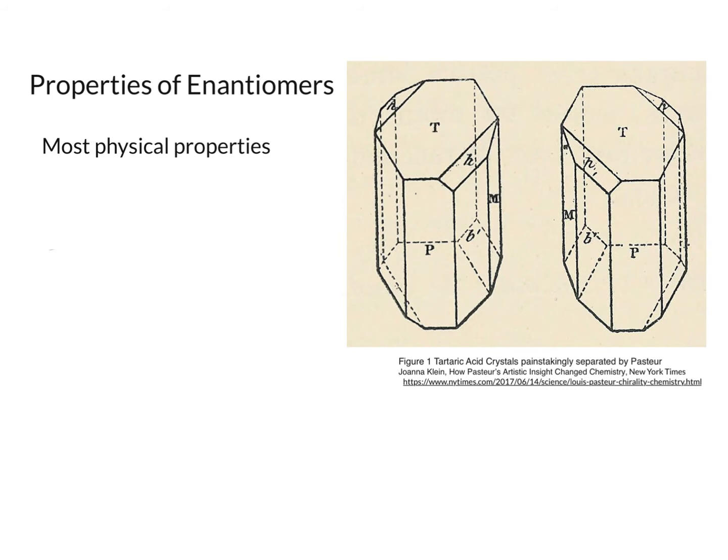So before we launch right into the calculation, I want to give you a little bit of context. We need to talk about the properties of enantiomers. We've already said enantiomers are the mirror image that is non-superimposable for a certain molecule. But how do people even know these existed? Well, it came from an experiment by Louis Pasteur, who I'm sure you've all heard of, and he found that tartaric acid crystals, as you see on the right,